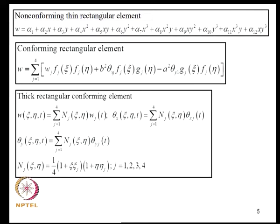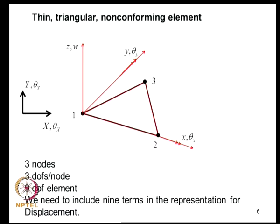Having considered rectangular geometry, we now consider triangular geometry. We start with the thin triangular non-conforming element, considering an element with 3 nodes. Since we need 3 degrees of freedom at every node, this element has 9 degrees of freedom total, and we need to include 9 terms in the representation for displacement.